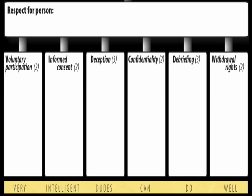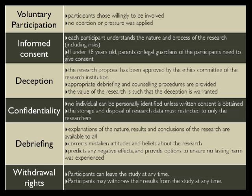Now, there are seven main areas or subheadings of respect for persons. And you can remember those by the mnemonic of 'very intelligent dudes can do well', which is voluntary participation, informed consent, deception, confidentiality, debriefing and withdrawal rights. I've got a slide about that, lots of information, but not enough time to cover that in this podcast. Thanks for listening.